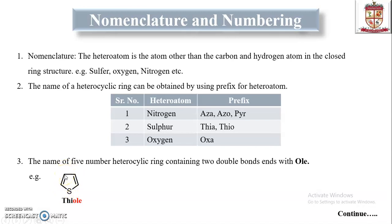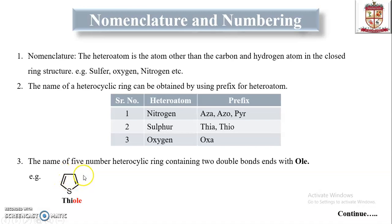We use the prefix 'thia' for sulfur, as stated earlier. The ring contains 5 positions: first, second, third, fourth, and fifth. The first carbon position is replaced with sulfur, and that is why we use the prefix 'thia'. It contains two double bonds, so we use the suffix OLE. These two double bonds make it a fully unsaturated ring, and that is why it is named thio with the nomenclature based on two double bonds.